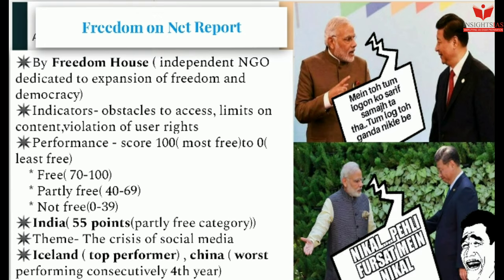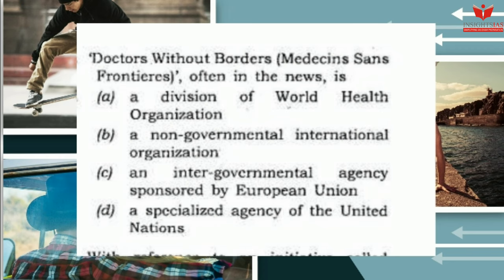Every year, questions are asked about organizations and NGO reports in the prelims, and people tend to make silly mistakes. A 2016 prelims question asked: 'Doctors Without Borders / Médecins Sans Frontières, often in news — what is it?' Option A: a division of the World Health Organization; Option B: a non-governmental international organization; Option C: an inter-governmental agency sponsored by the European Union; Option D: a specialized agency of the United Nations. The correct answer is Option B — a non-governmental international organization.